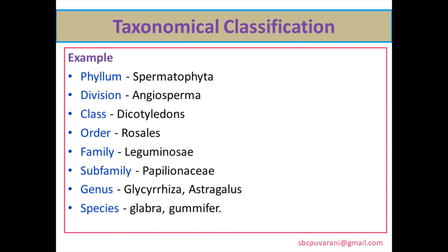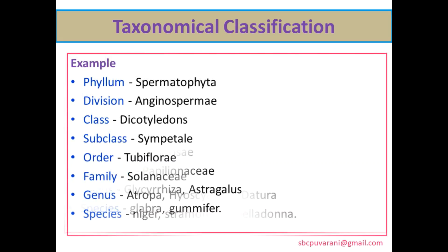Examples of taxonomical classification: The drug Glycyrrhiza glabra — genus is Glycyrrhiza, species is glabra. Astragalus gummifera — genus is Astragalus, species is gummifera. These drugs come under phylum Spermatophyta, division Angiospermae, class Dicotyledon, order Rosales, family Leguminaceae, subfamily Papilionaceae.